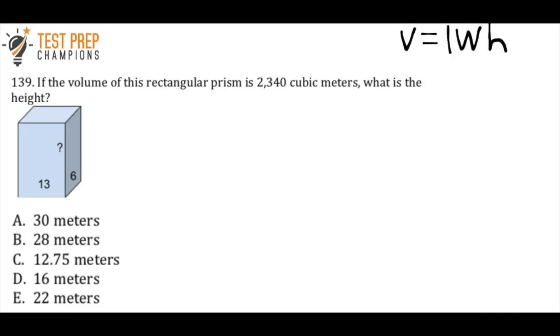If the volume of this rectangular prism is 2,340 cubic meters, what is the height? Is it A, B, C, D, or E?